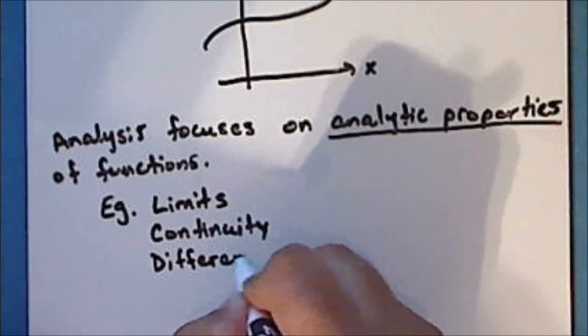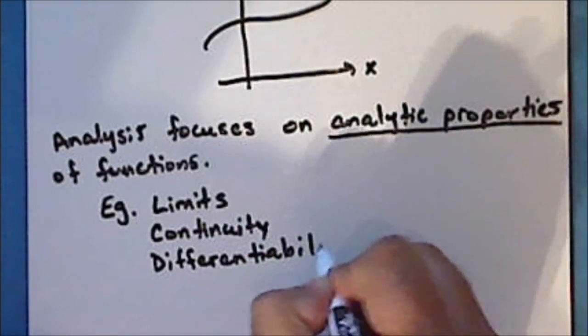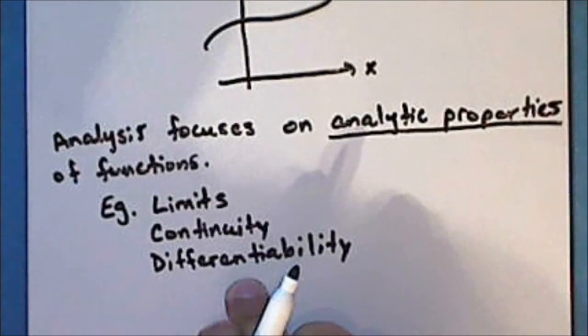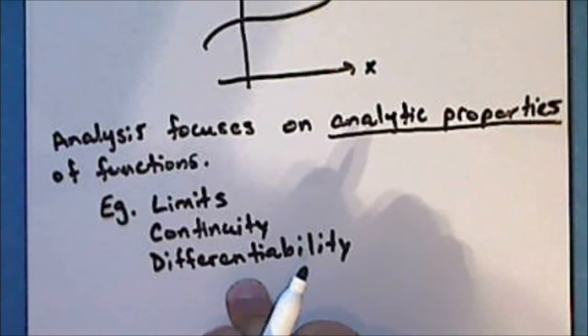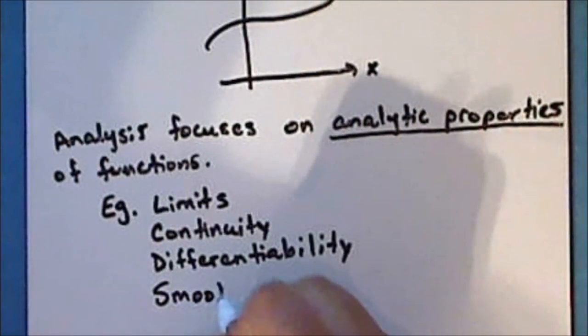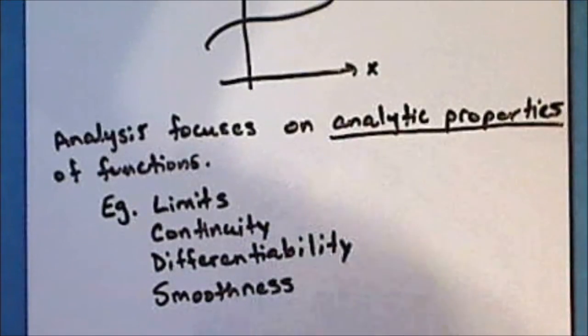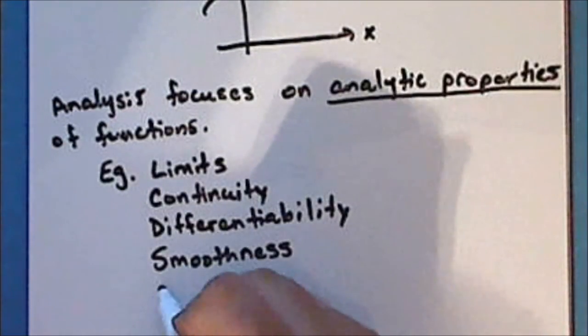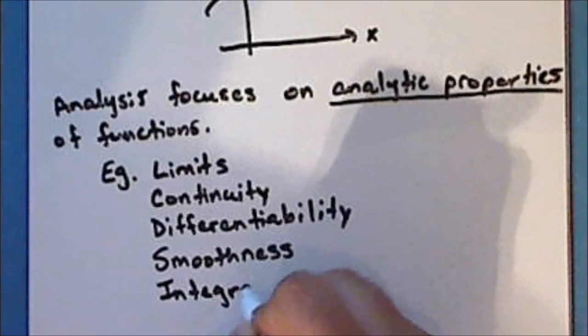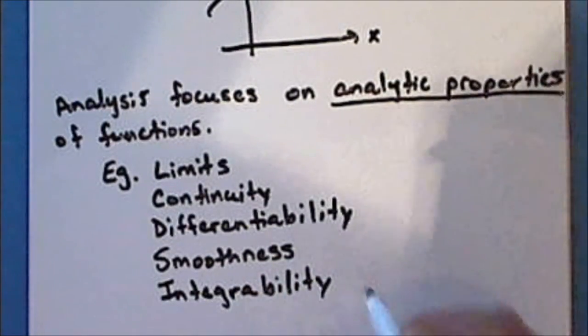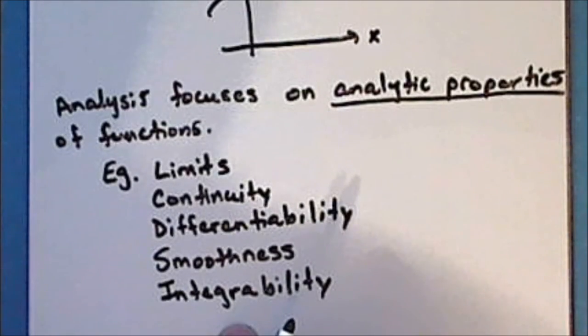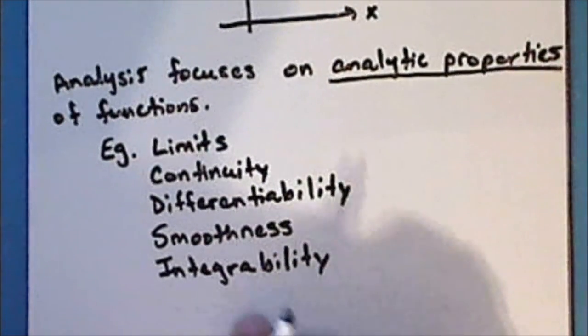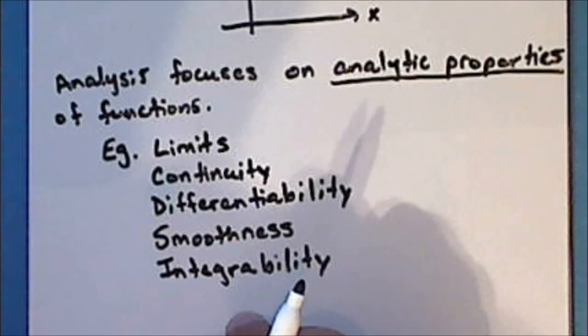For example, differentiability, which is about linear approximations of the function. Smoothness, which relates differentiability and continuity. Integrability, which especially for definite integration is about aggregate behavior such as the area or volume that can be contained by the limits of a function and other limiting points or surfaces.